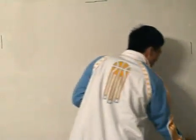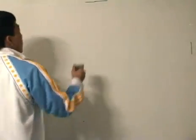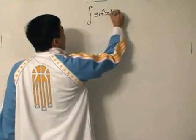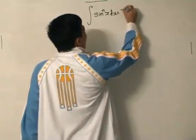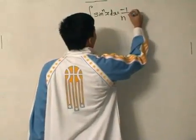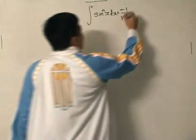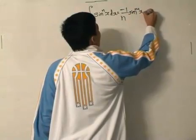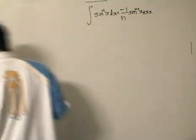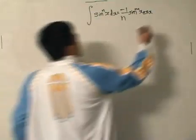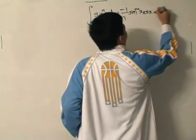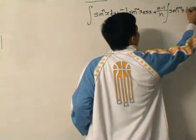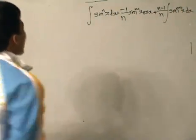First, establishing the recursive formula. The recursive formula that we want to show is that the integral of sin^n(x) dx is equals to -1/n, let me check. I believe it's sine, sin^(n-1)(x)cos(x), and plus (n-1)/n integral of sin^(n-2)(x) dx. That's the recursive formula we want to show.